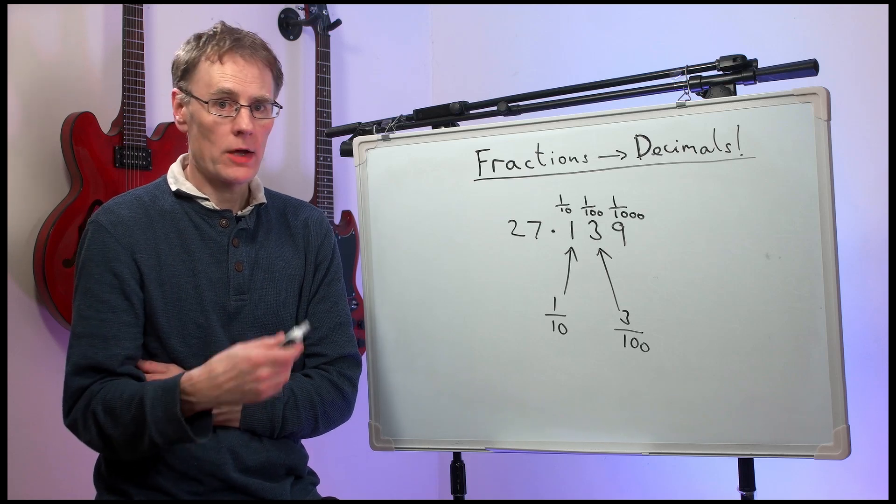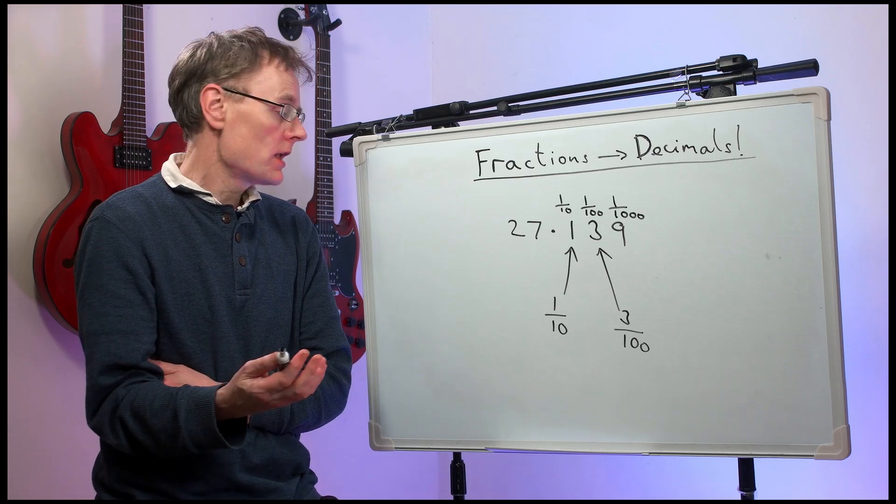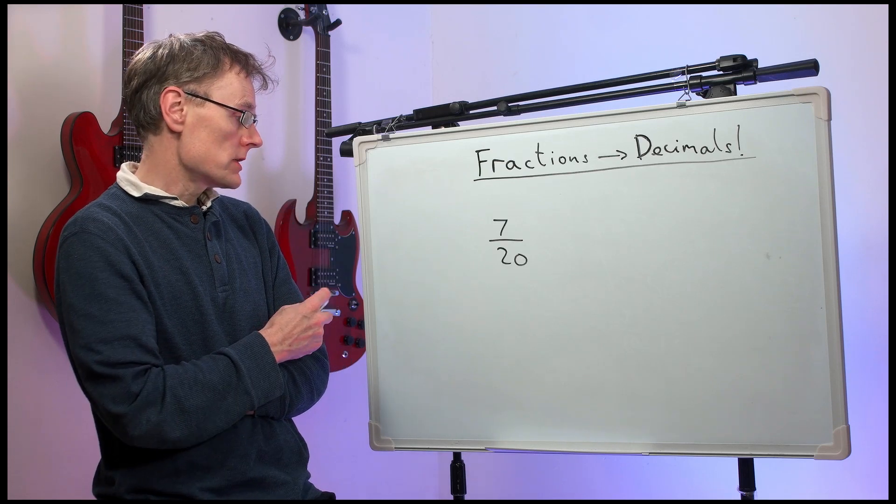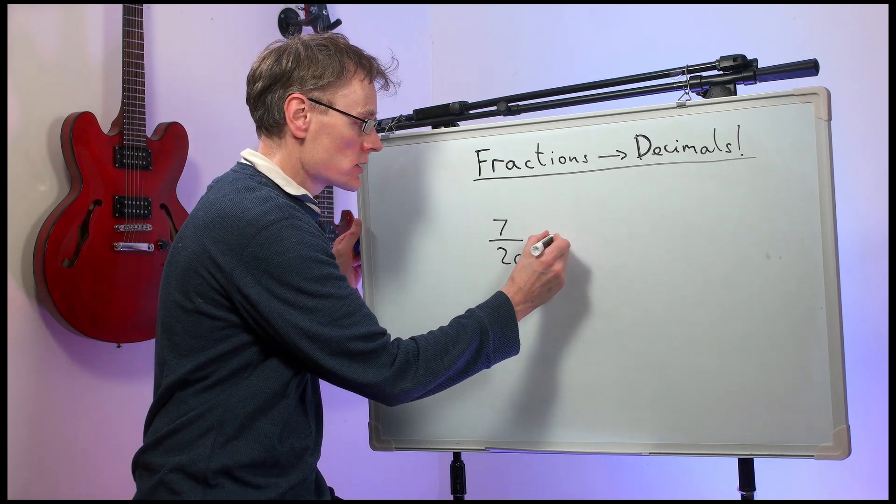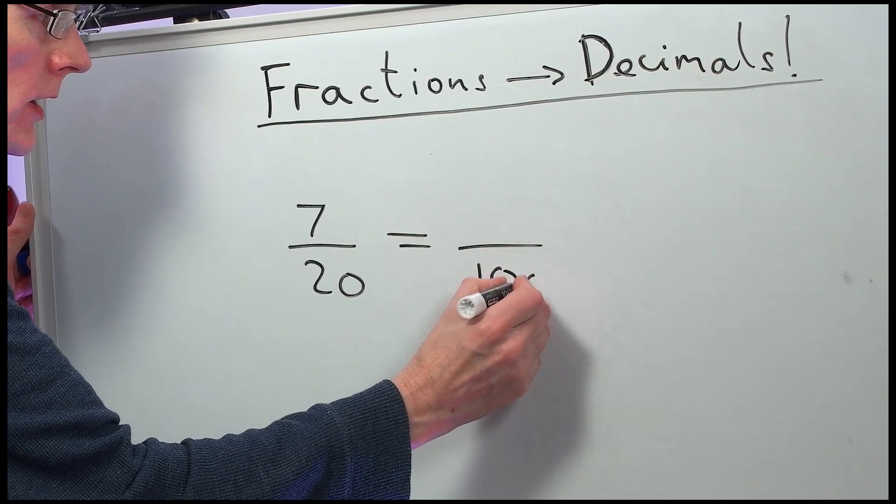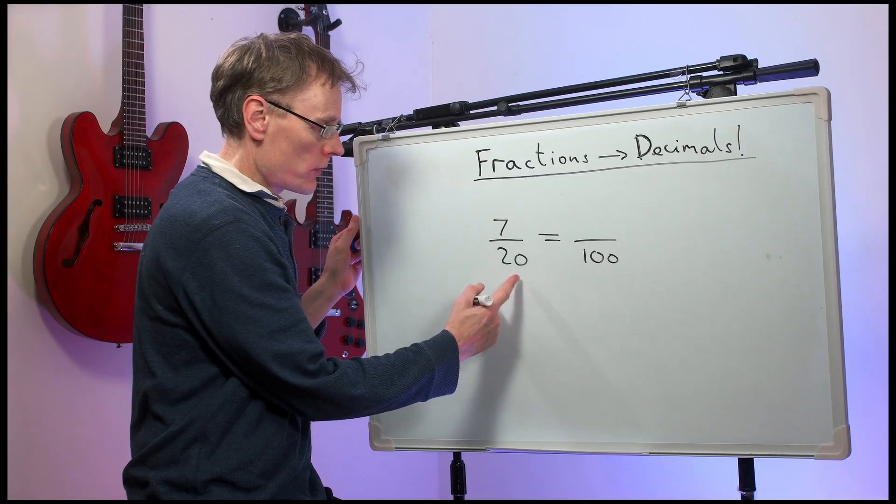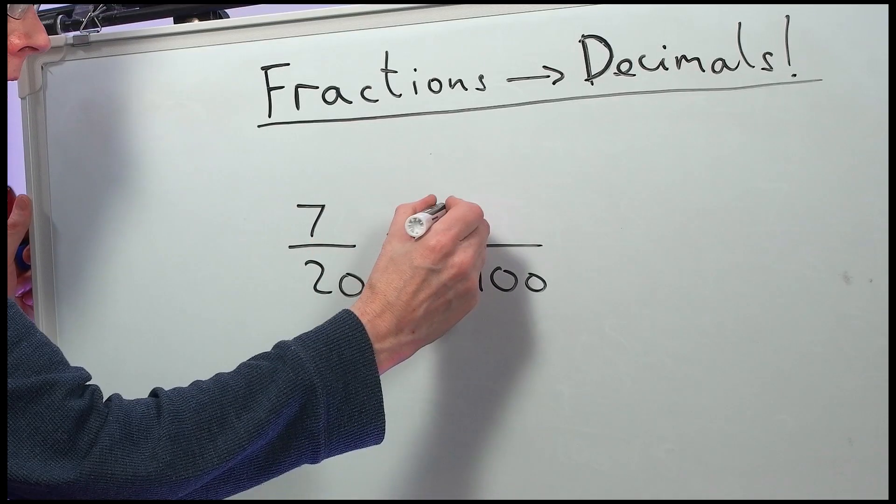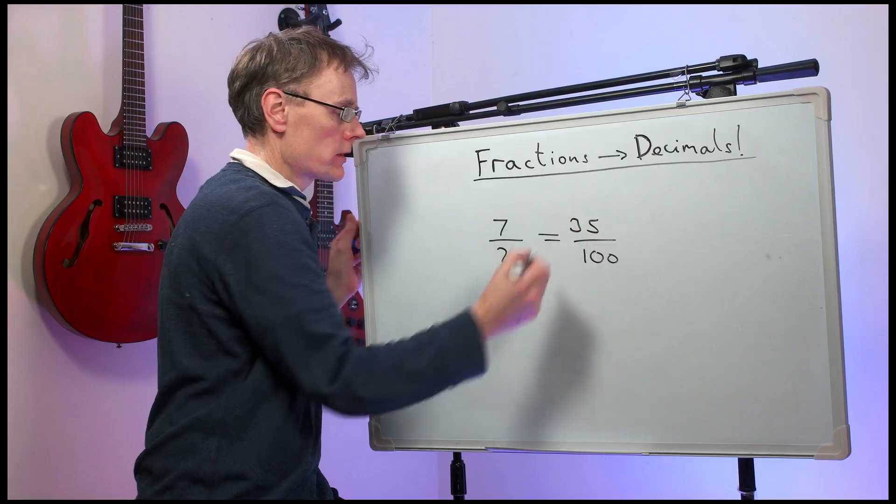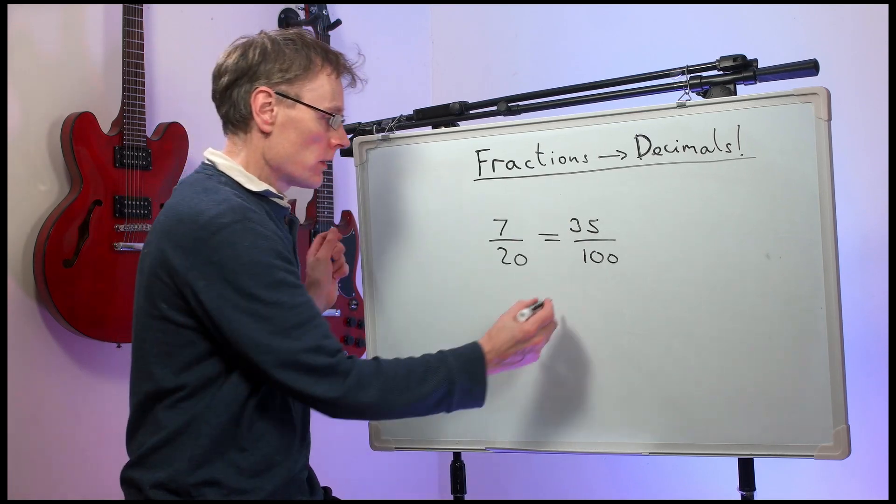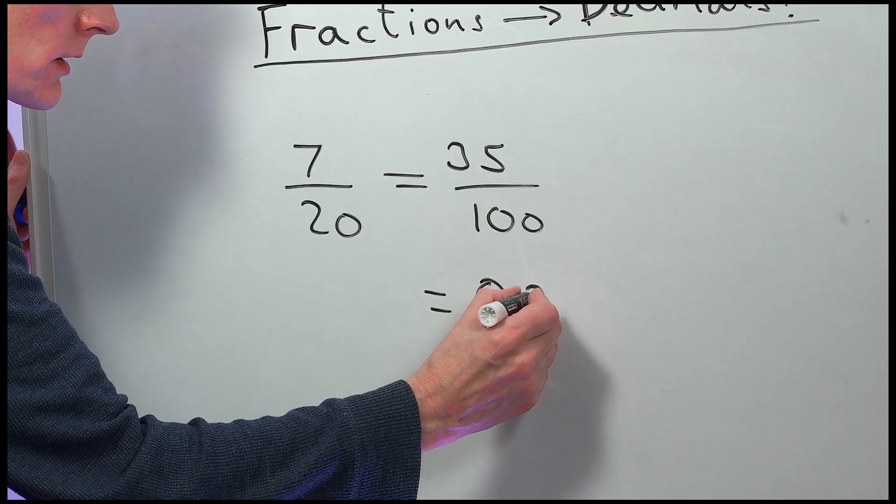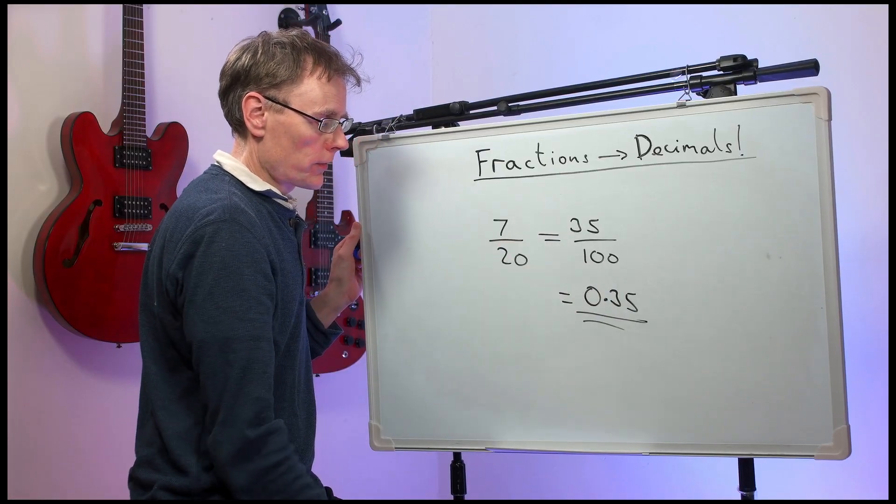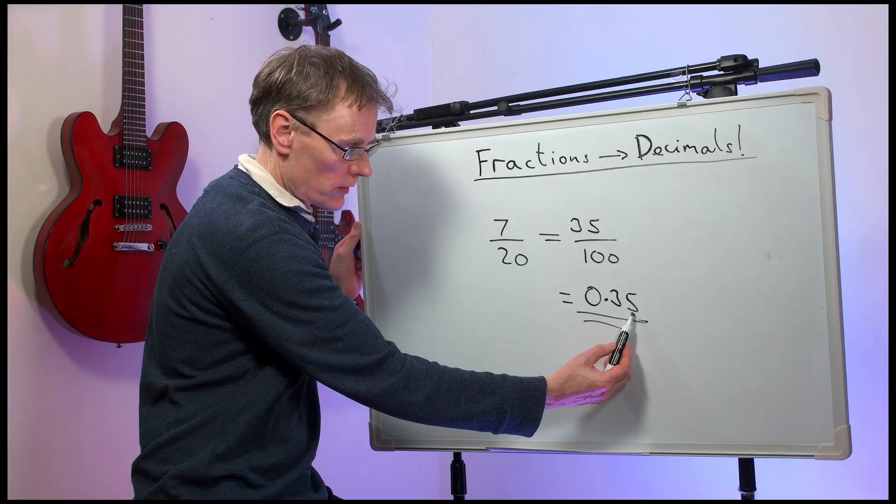So, if you can change a fraction to be out of ten, or a hundred, it's very easy to change it to a decimal. For example, seven-twentieths. We could change that to be something out of a hundred. Here, we've multiplied the bottom by five, so we times the top by five. We have thirty-five out of a hundred. That is 0.35. Thirty-five hundredths. There's the hundredths column.